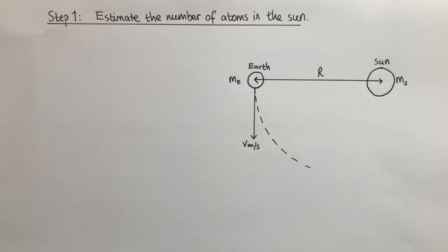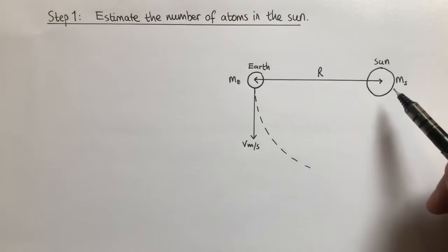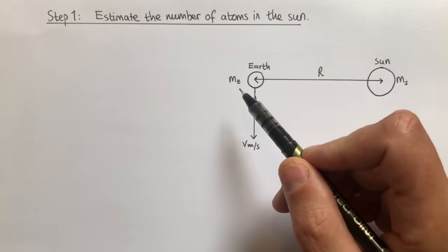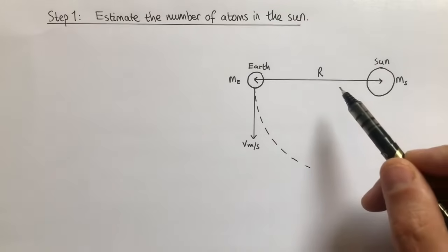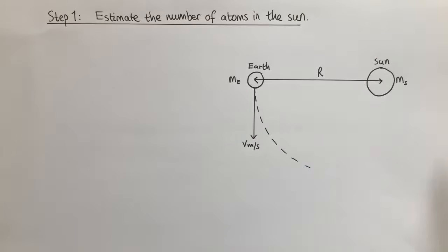Our first step is to estimate the number of atoms in the Sun. In order to do this, we need to calculate the mass of the Sun, and our approach is going to involve using Newton's Universal Law of Gravitation, along with circular motion. In the diagram, you can see the Sun, which has a mass MS, the Earth, which has a mass ME, and the distance between the Earth and Sun is given by R, which is the radius.